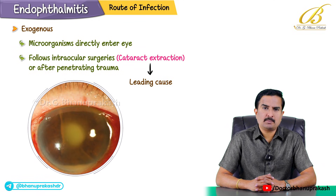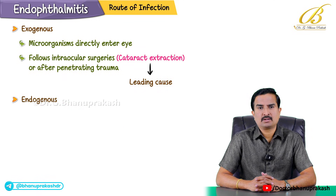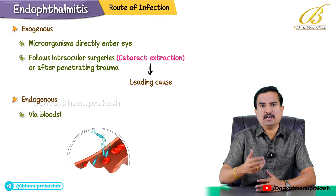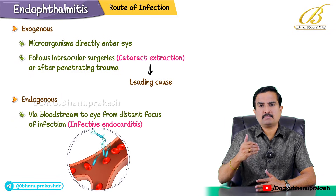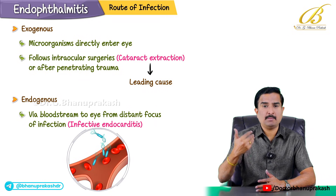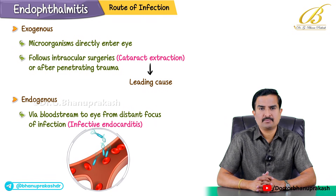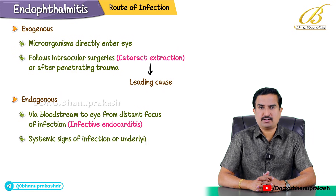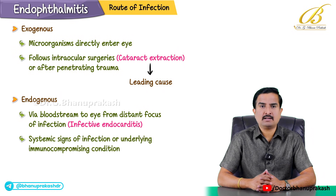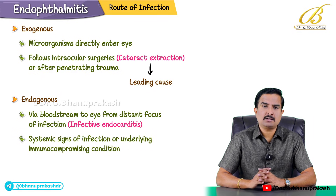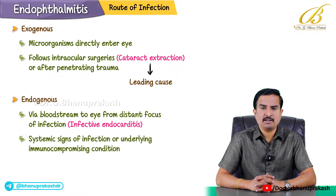In endogenous infection, organisms travel via the bloodstream to the eye from a distant focus of infection — for example, from infective endocarditis. Patients may have systemic signs of infection or an underlying immunocompromised condition. These are the two routes by which infection can spread.